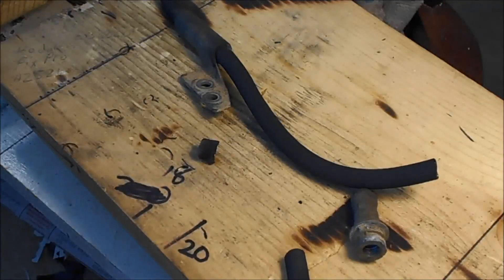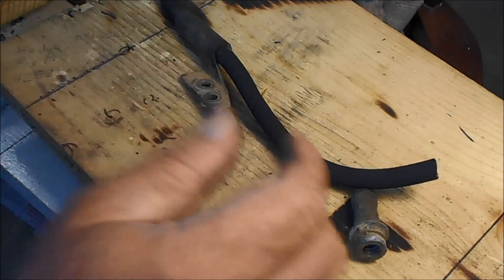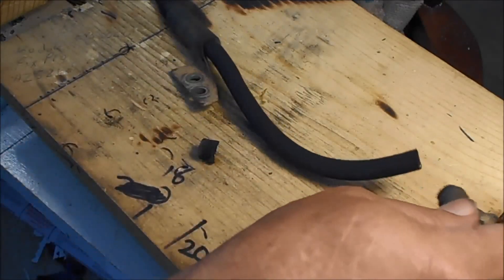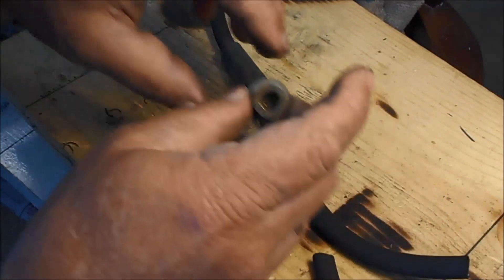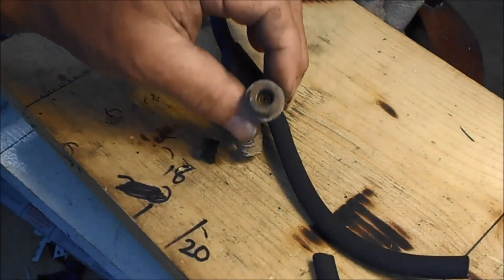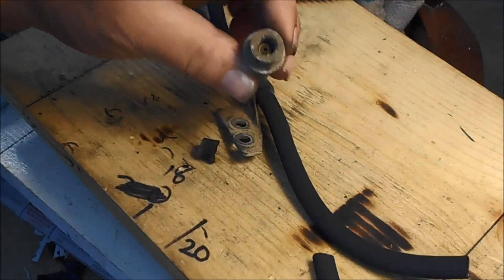All right, this is the brake line off of a 95 Chevrolet, and this is actually the whole line. I've cut it up, but I don't think you'll be able to see that there.